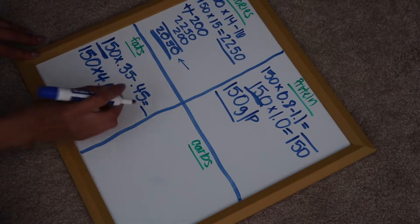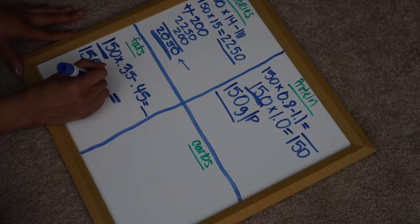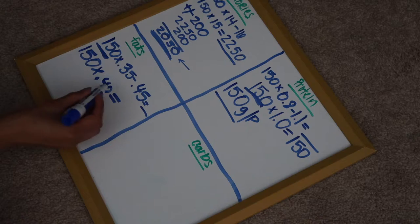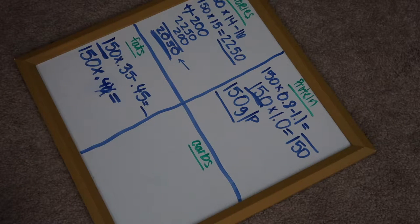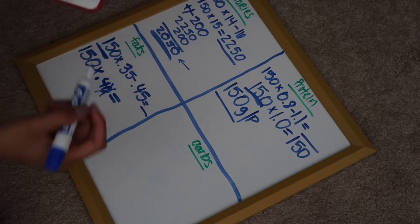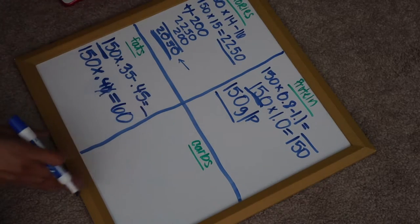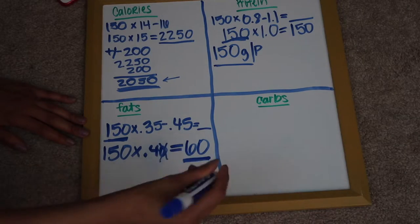If you get what I'm saying, I'm going to do 150 times 0.40. And that gives me, 150 times 0.4 equals 60. So 60 is the amount of fats I eat in a day.